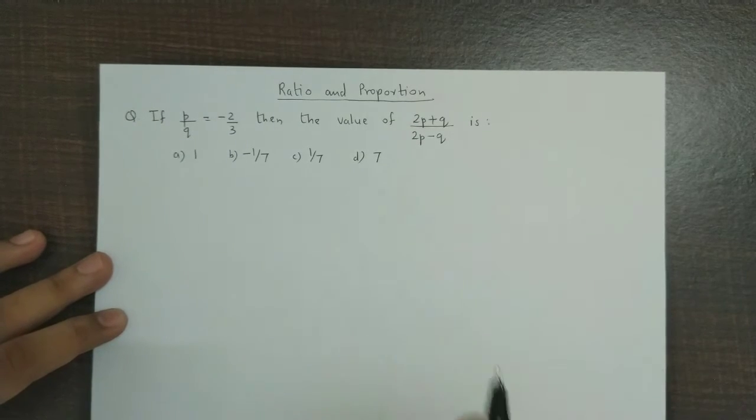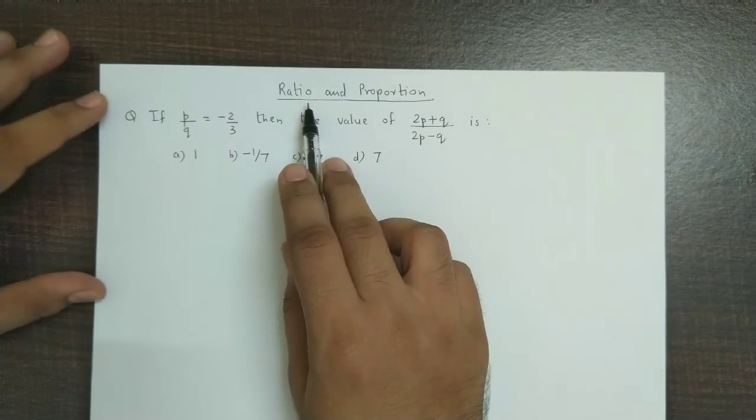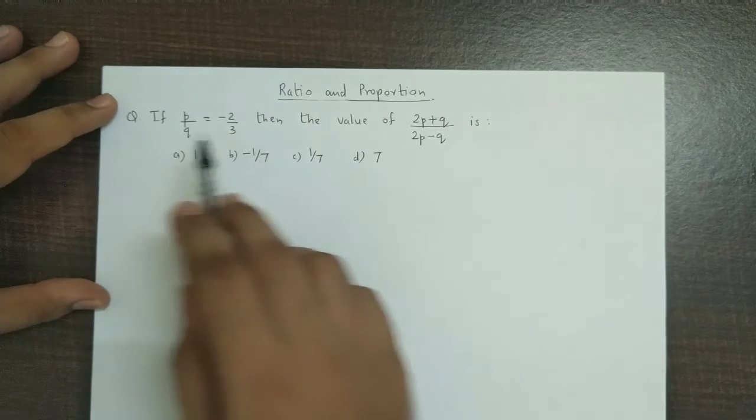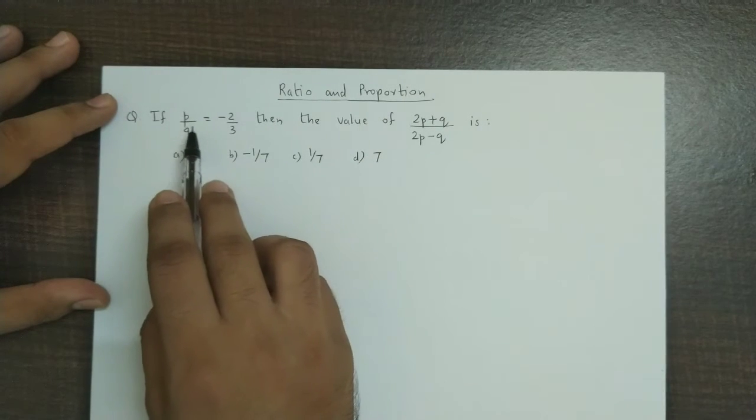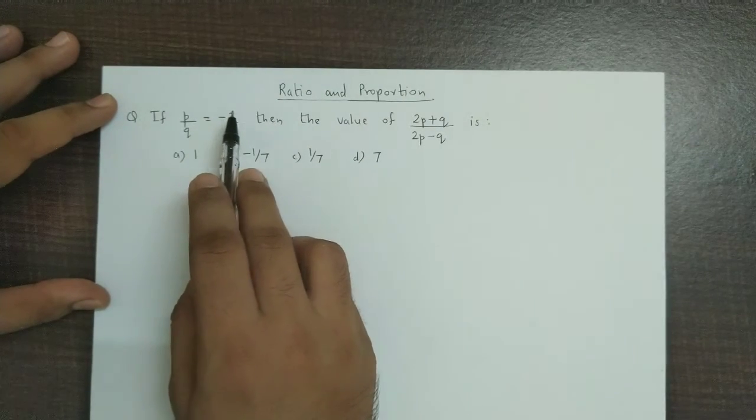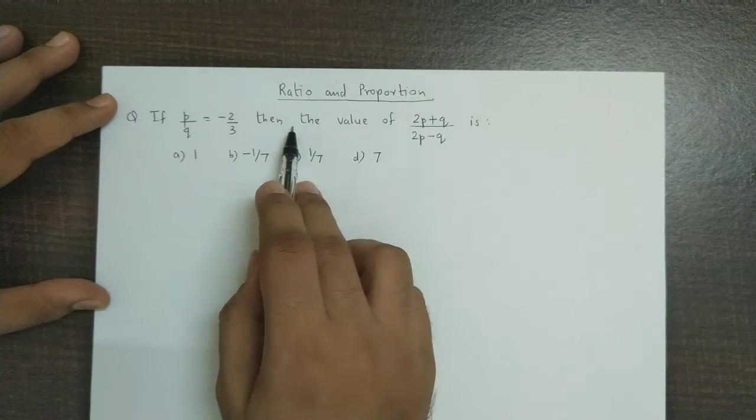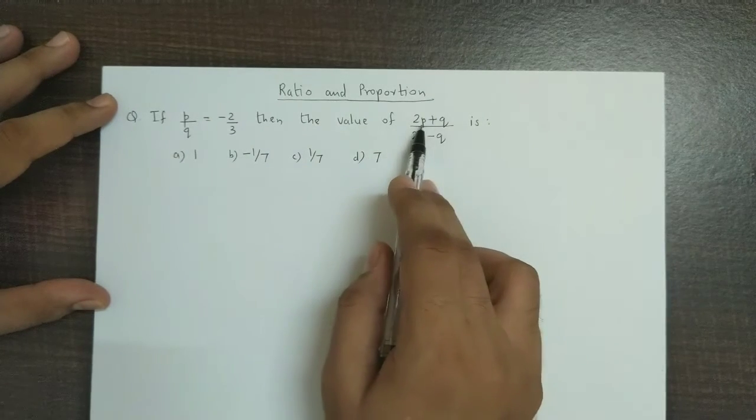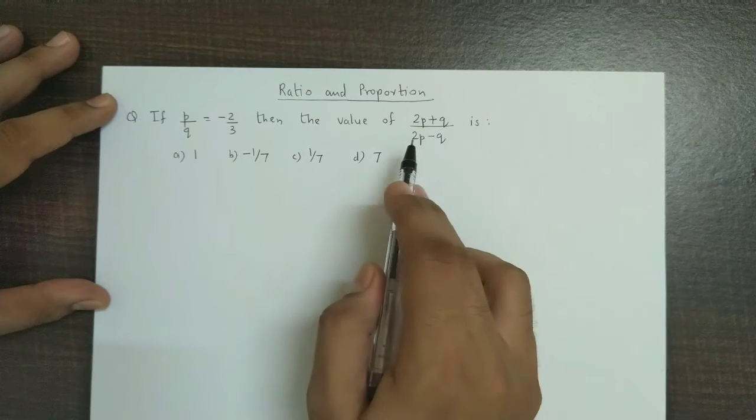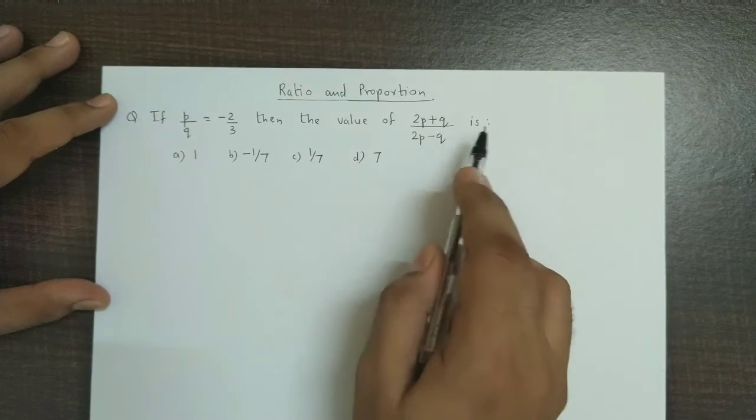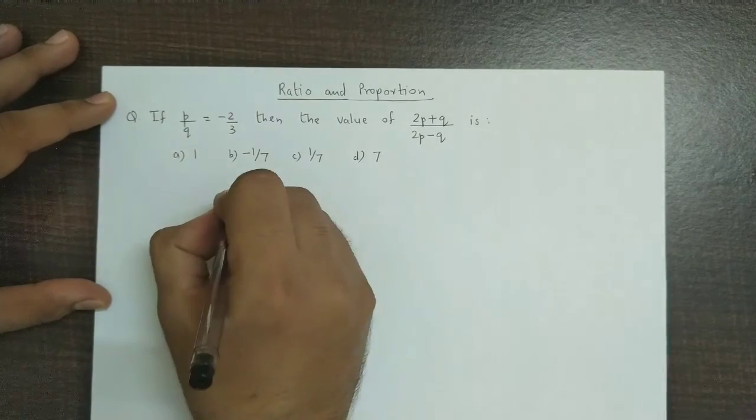Hello and welcome back. We now discuss an example from ratio and proportion. The question is: if p/q is equal to -2/3, then the value of (2p+q)/(2p-q) is...